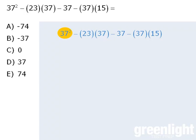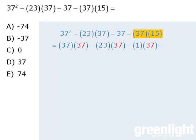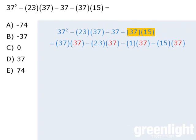First notice that we can take 37 squared here and rewrite it as 37 times 37. Next we will take 23 times 37 and leave it as it is. 37 can be rewritten as 1 times 37, and we can rewrite 37 times 15 as 15 times 37.